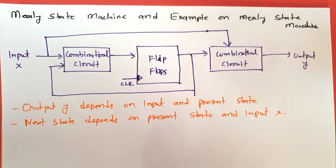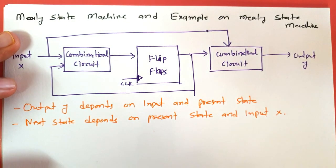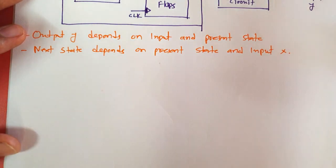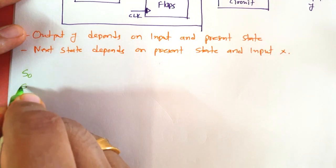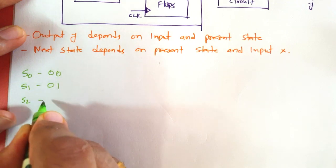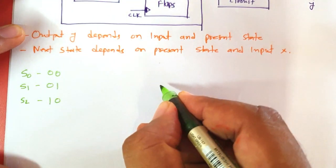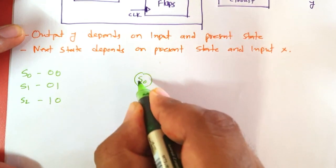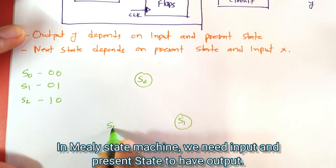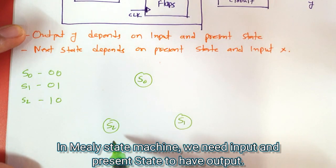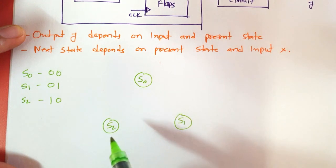Now I will explain that difference with one example. For this example based on Mealy State Machine, I will be considering three states: S0, S1, and S2. Let us say S0 is 00, S1 is 01, and S2 is 10. When you draw the state diagram, note that in Moore State Machine we write output along with the state, but in Mealy State Machine we don't write output along with the state, because output changes with respect to both state and input.